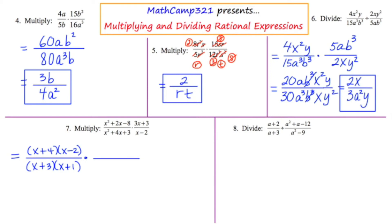Moving to the upper right, I can take a 3 out of that binomial, leaving me with 3(x + 1). And the denominator on the right can't be factored further — it's just (x − 2). Now I'm going to let the fun begin.